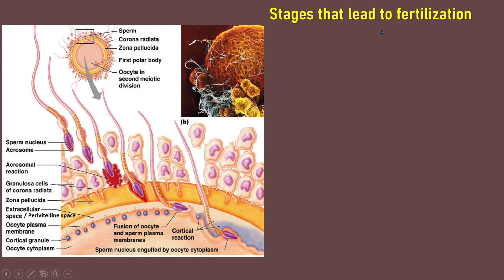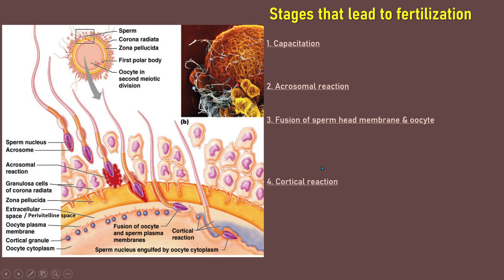The stages that lead to fertilization are divided into four stages. The first stage is capacitation. The second stage is acrosomal reaction. The third stage is fusion of sperm head membrane and oocyte membrane. The fourth stage is cortical reaction.